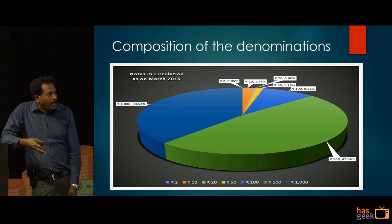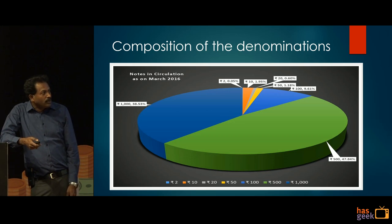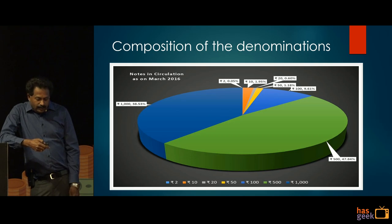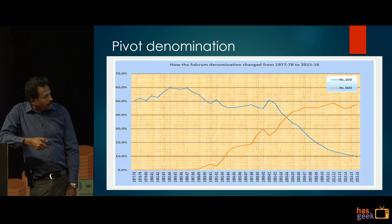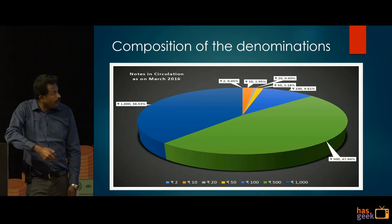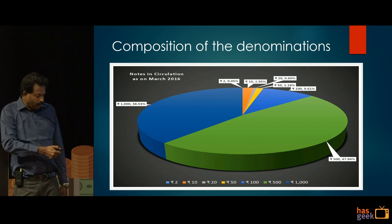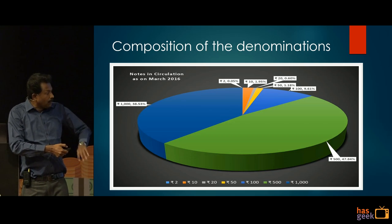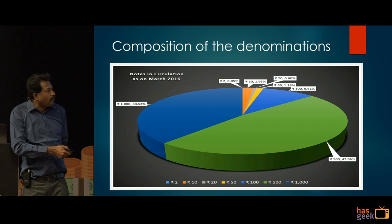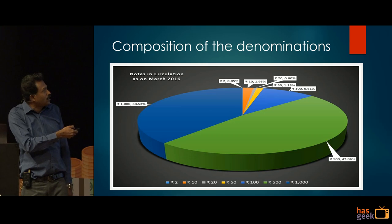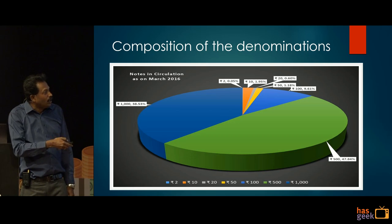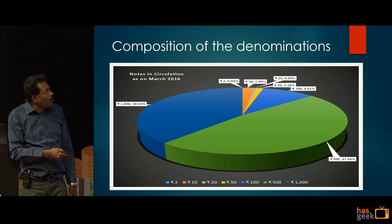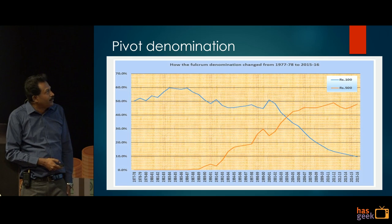I went to the RBI data and found that the 500-rupee note and 1000-rupee note together constituted 86.4 percent of the total currency in circulation.